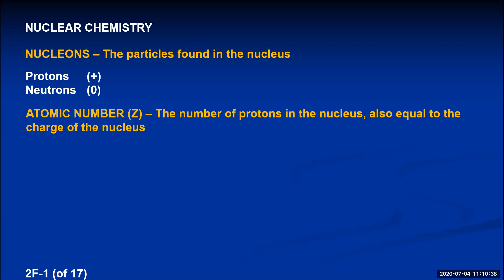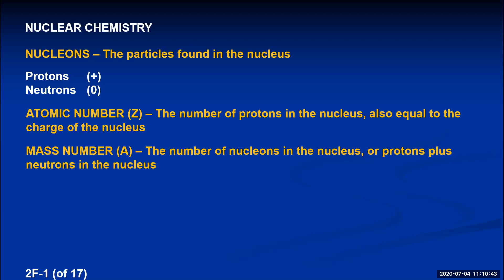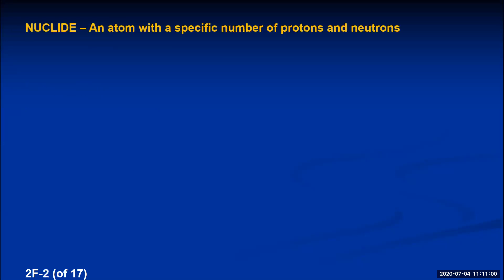If you add the number of protons and neutrons found in the nucleus of an atom, that number is called the mass number, abbreviated by the letter A. It's the number of nucleons in the nucleus — protons plus neutrons. If you have an atom with a particular number of protons and neutrons, we call that a nuclide — an atom with a specific number of protons and neutrons.